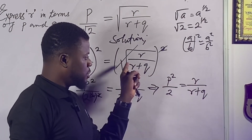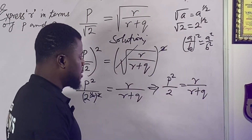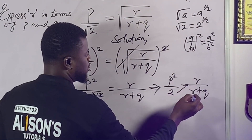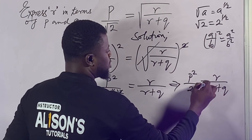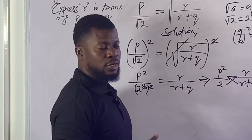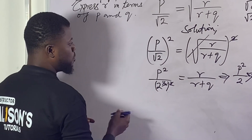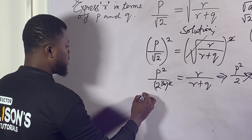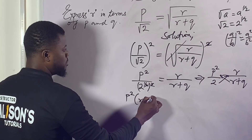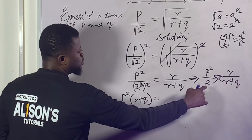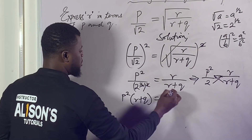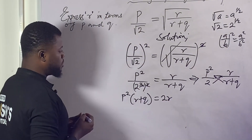What do we need to do at this point? We need to cross multiply. This 2 will multiply by the arrow, and the arrow plus q will multiply by the p squared. So we say: p squared times (arrow plus q) equals 2 times arrow, which gives us 2 arrow.